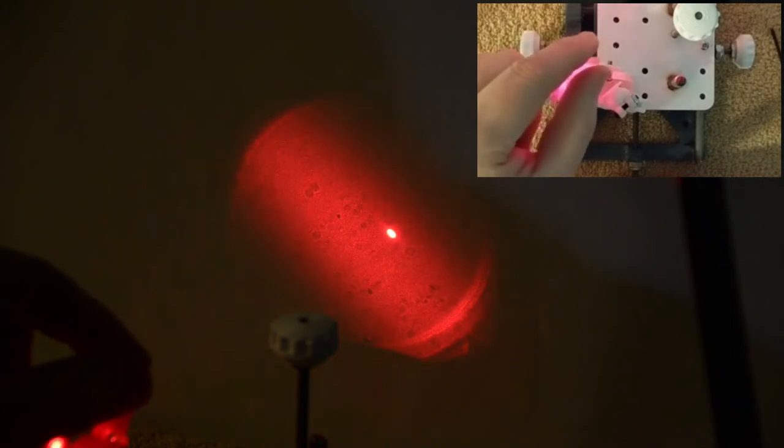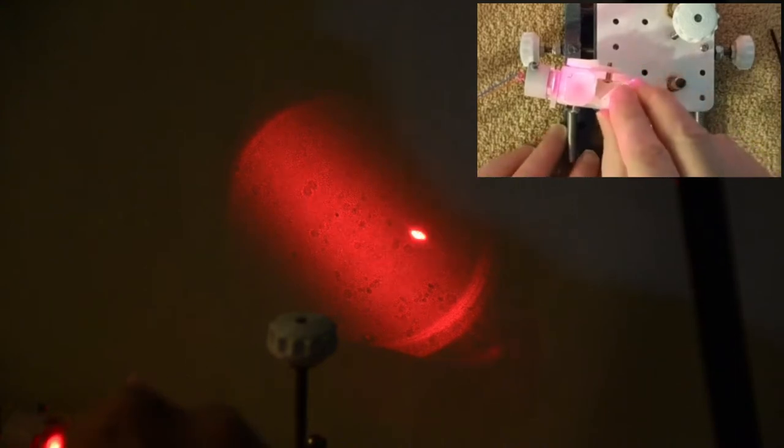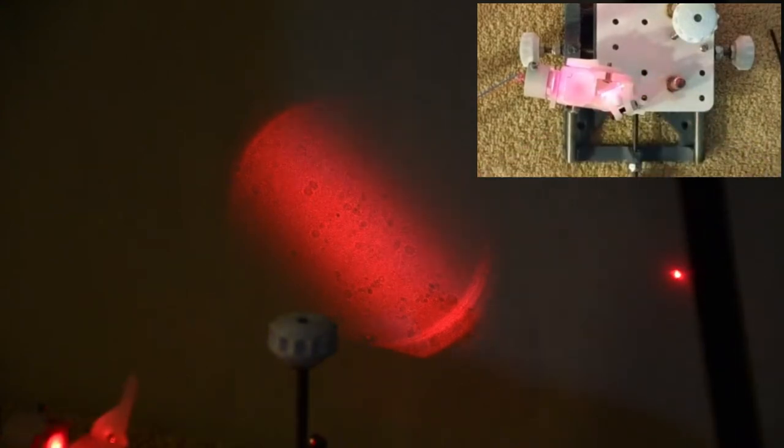Now we have a split screen where the inset video shows the overhead view of what I am doing to the bath at the same moment as you can see the beams projected onto the wall. Let me rotate the diverger into the left beam, which is the test beam.